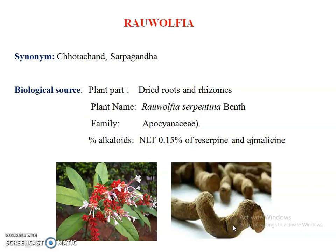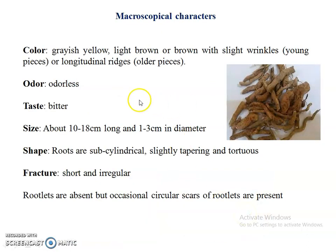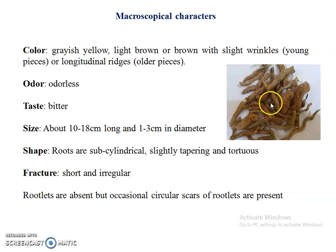Looking at the picture, the root resembles a snake — hence Sarpagandha and serpentina. Coming to the macroscopical characters: the color of the roots is light brown, and they have slight wrinkles. In crude drugs, fine and delicate furrows are known as wrinkles. Wrinkles are present in young roots and rhizomes, whereas ridges are present in older parts. The odor is odorless, and the taste is bitter, as most alkaloids have a bitter taste. Size is 10 to 18 cm long and 1 to 3 cm in diameter.